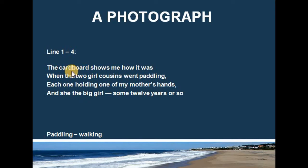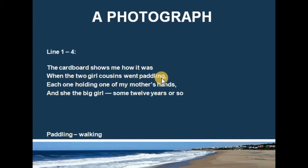There is another reason also. At present the photograph has become just a piece of paper and cardboard for the poetess after the death of her mother. That photograph shows me — 'me' here refers to the poet — how it was when the two girl cousins went paddling, meaning they were walking on the seaside.